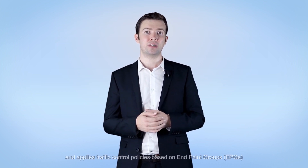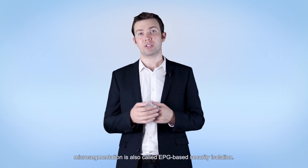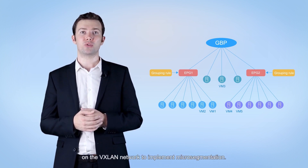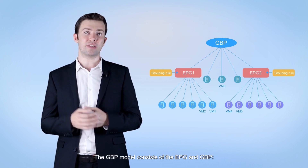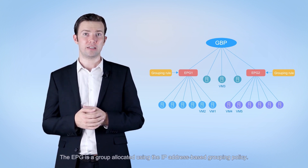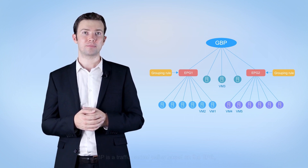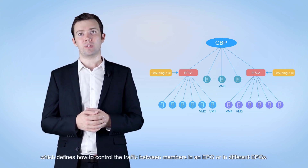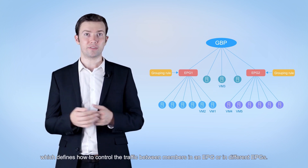Micro-segmentation provides more fine-grained grouping rules compared with VLANs or VNIs. It groups servers on a DCN based on specified rules and applies traffic control patterns. This is also called EPG-based security isolation. CE series switches use the group-based policy (GBP) model on the VXLAN network to implement micro-segmentation. The GBP model consists of EPGs and GBPs. An EPG is a group allocated using IP address-based grouping policy and can contain multiple servers. GBP is a traffic control policy based on EPG, protocol number, and port number, defining how to control traffic between EPG members.